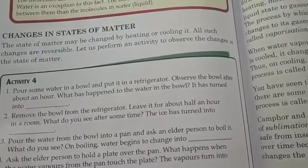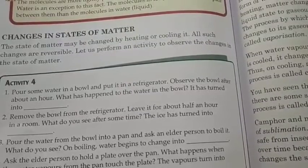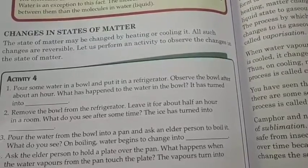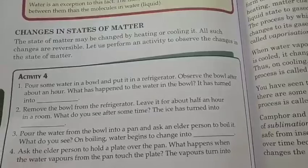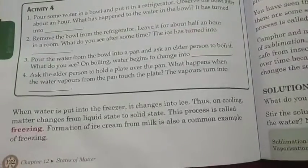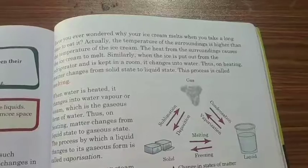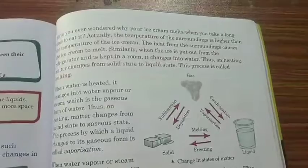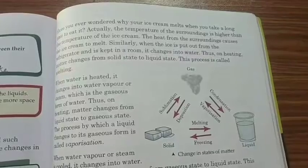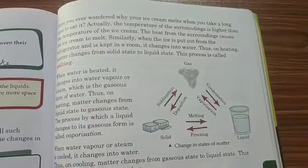Change in state of matter. The state of matter may be changed by heating and cooling. All such changes are reversible. Let us perform an activity to observe this change in states of matter. Freezing: हम किसी भी चीज़ को freeze करते हैं यानि अगर हम water को freeze करेंगे तो वो solid form में आ जाएगा. Melting: liquid form में जो solid form में यानि ice cube रहता है, अगर हम उसे room temperature में रखेंगे तो वो धीरे धीरे melt होने लगेगा यानि पिघलने लगेगा और liquid form में आ जाएगा.